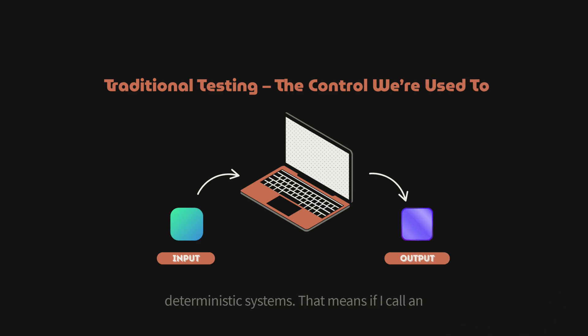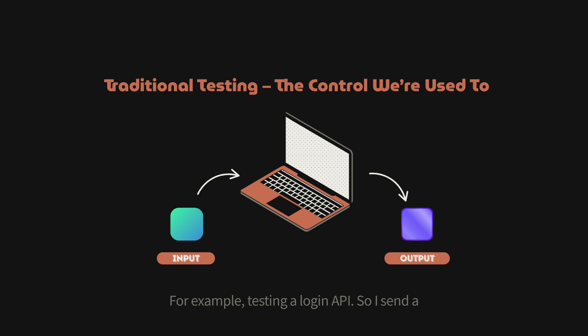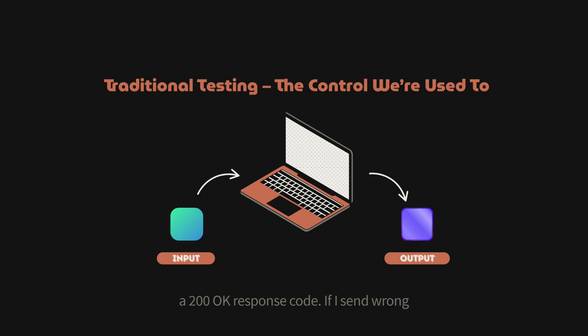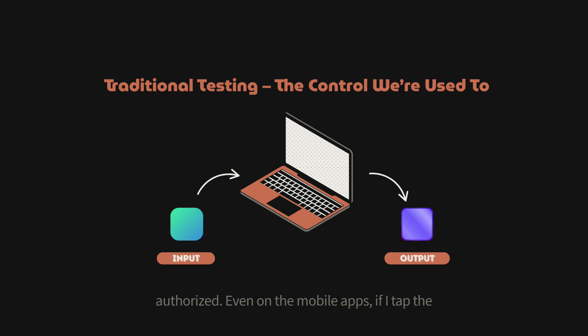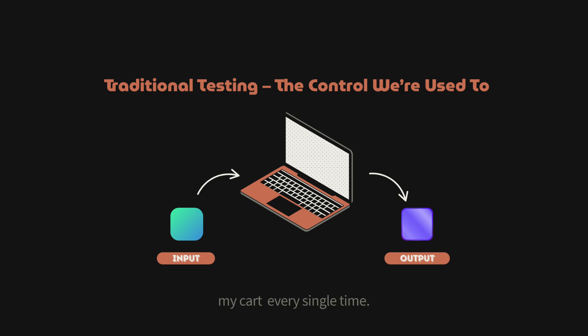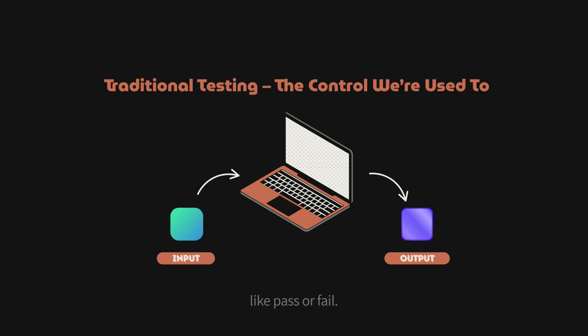In traditional software testing we deal with deterministic systems. If I call an API with input A, I always expect output B. For example, testing a login API: send correct credentials and you must get a 200 OK; send wrong credentials and you must get a 401 Unauthorized. On mobile apps, if I tap the Add to Cart button, the item should land in my cart every single time. These rules are rigid, predictable, and binary — pass or fail.